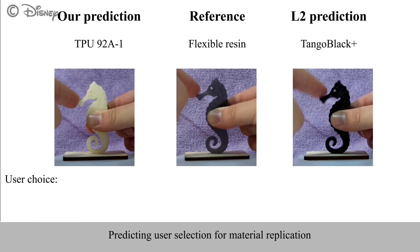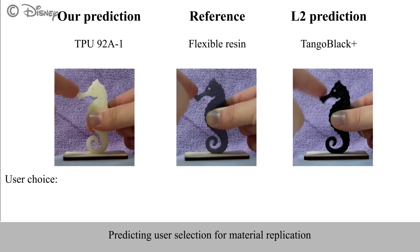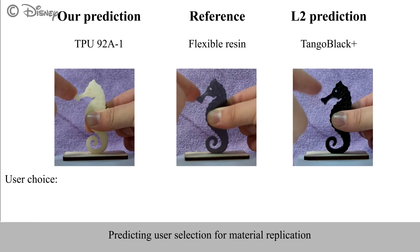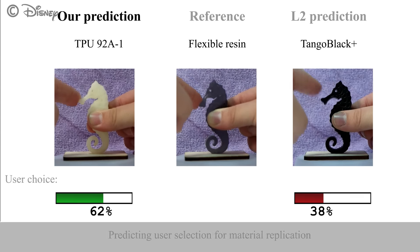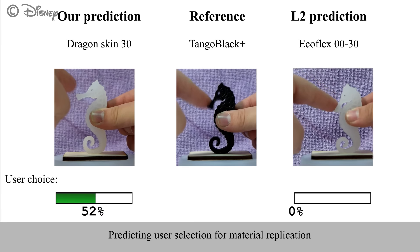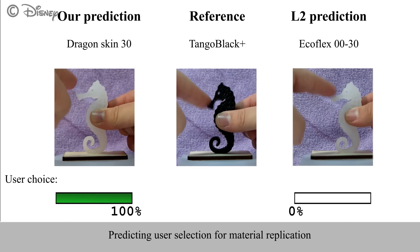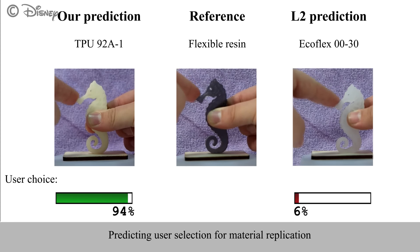During our second study, users were presented with three seahorses made from different materials. One seahorse was set as the reference and the task was to pick the best reproduction from the two remaining seahorses. In the first example, our prediction agreed with 62% of votes. During the second trial, our participants voted for the replica selected by our model. In the last example, 94% of participants voted for our reproduction. Finally, we present interactions with objects that were used for validating our compliance model.